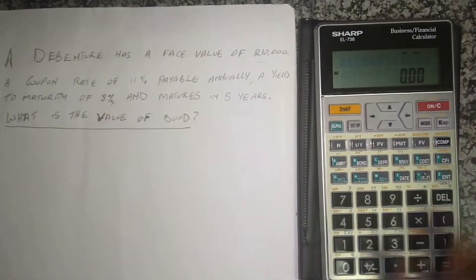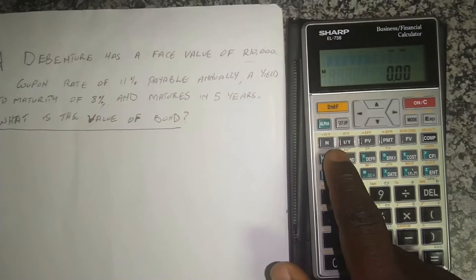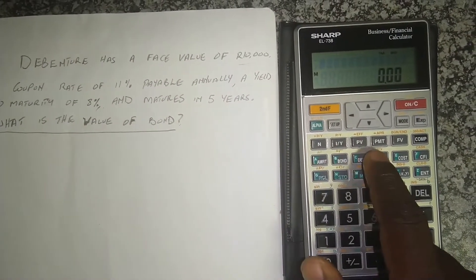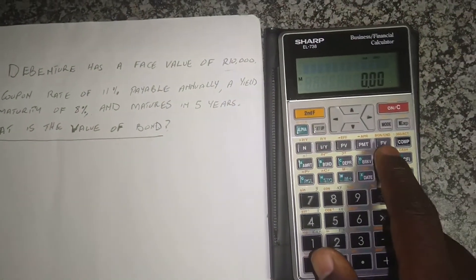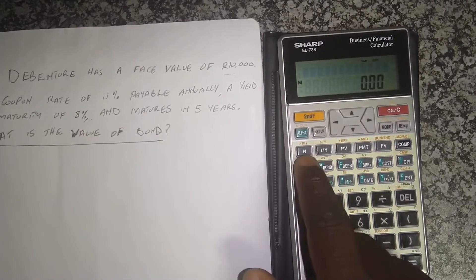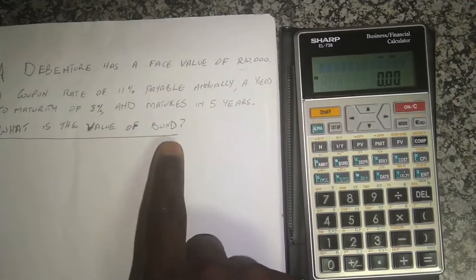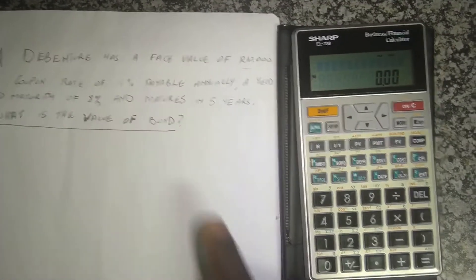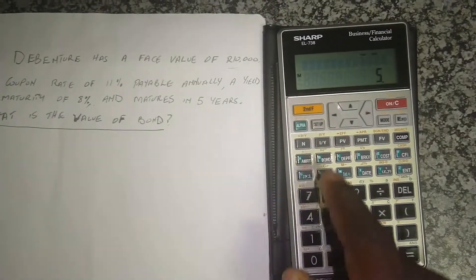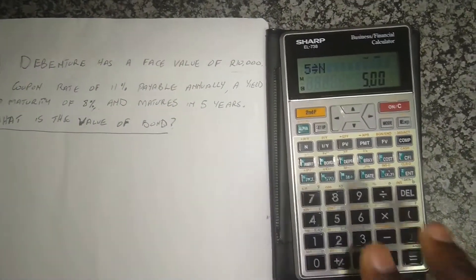So here's how you do it using your financial calculator. We have N, we have interest payments, we have present value payments and then the future value. N stands for the number of periods and we are told that it matures in five years, so we'll put that under N. Five, press N. So you press the number first and then you press the N.